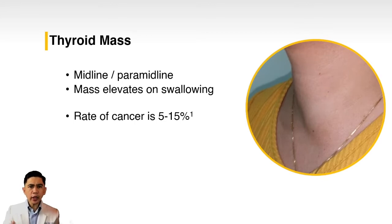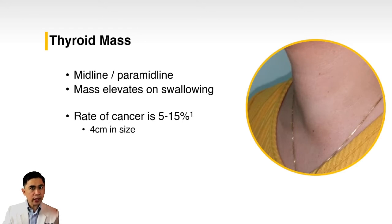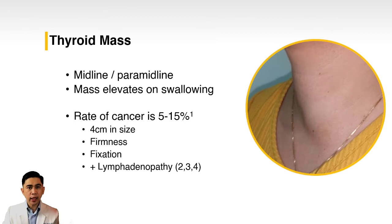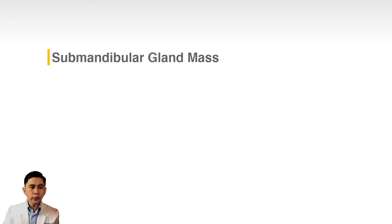The rate of cancer in thyroid masses is around five to fifteen percent — usually around four percent in females and around eight percent in males on average. The following features will tell you it can be worrisome: a size of four centimeters or larger, firmness, fixation to adjacent tissue, and associated lymphadenopathy, usually in levels two, three, and four.